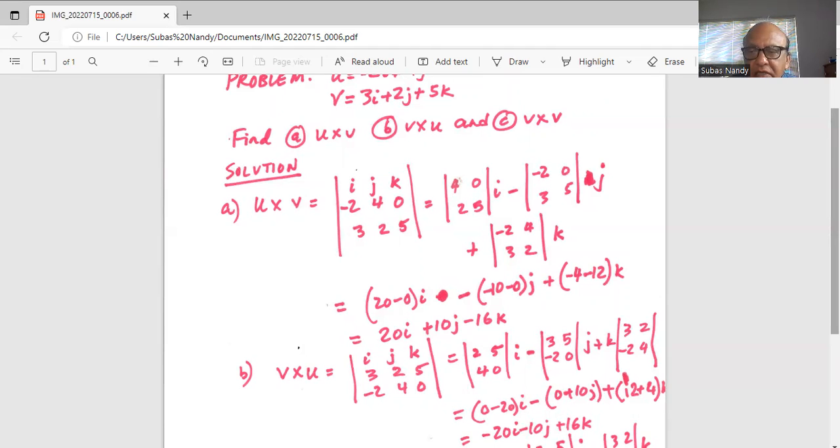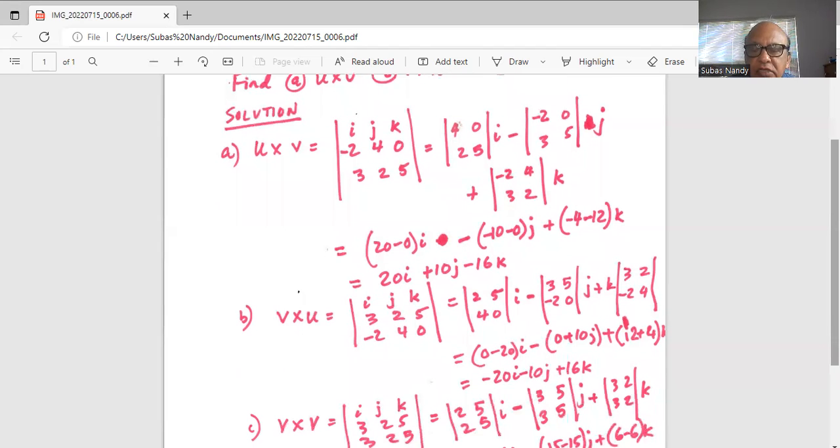So we have 2 times 0 is 0, minus 20, 4 times 5. There's a coefficient of i, minus 3 times 0 is 0, minus, 2 minuses will make it plus, 2 times 5 is 10j.